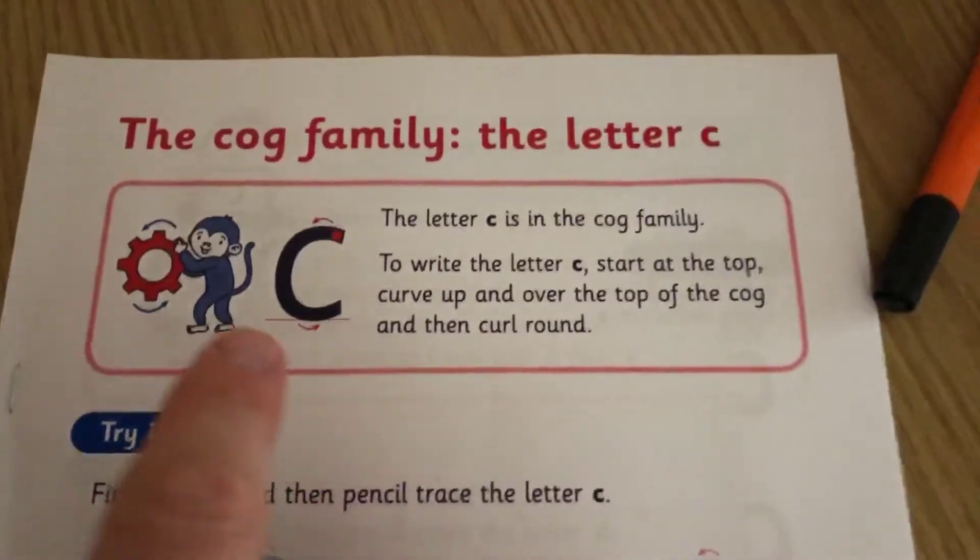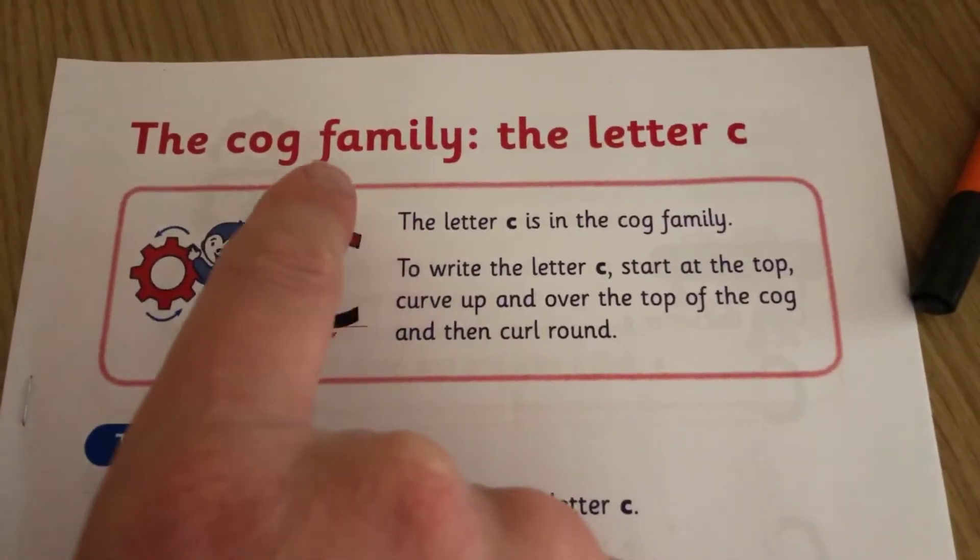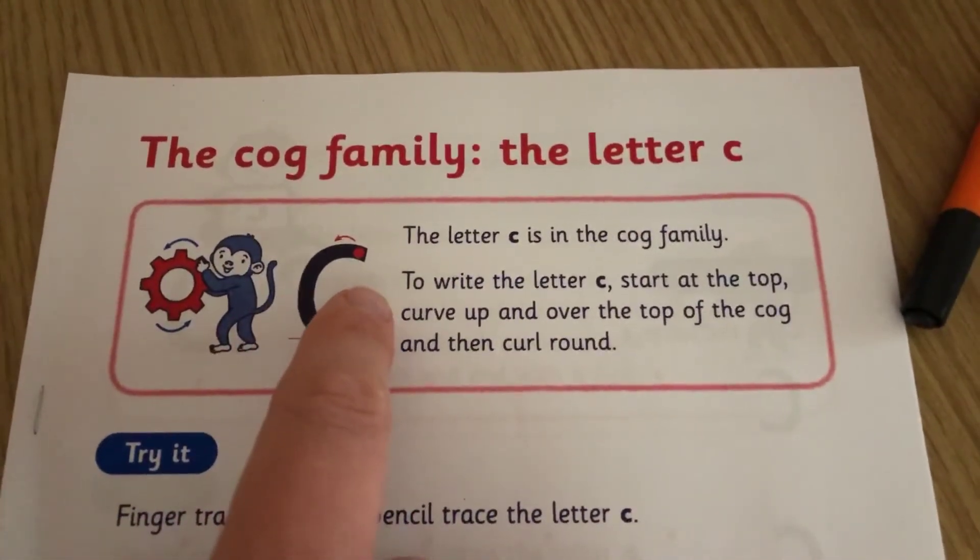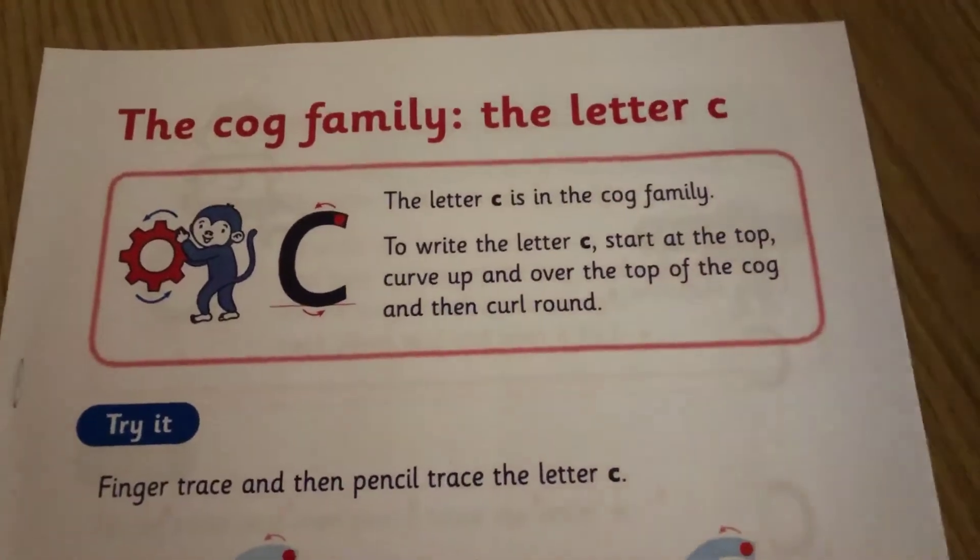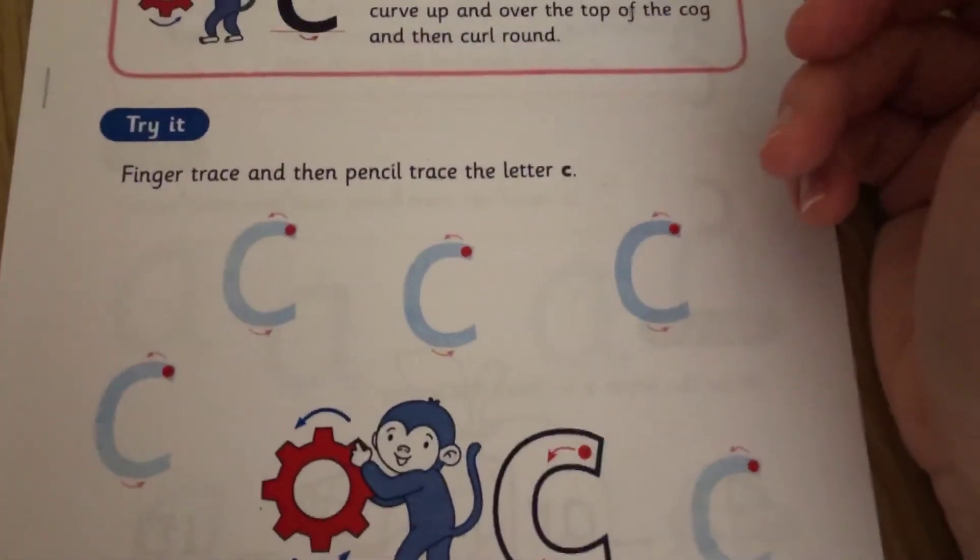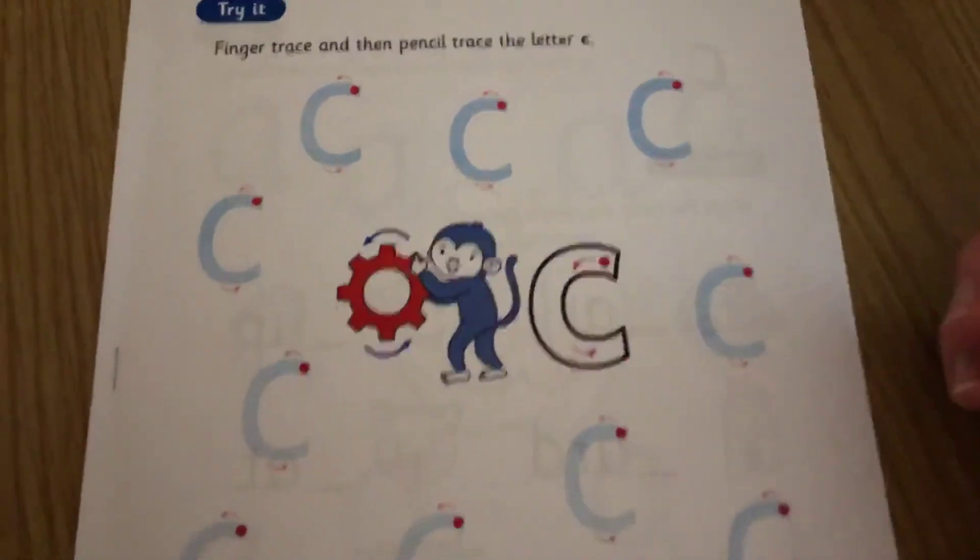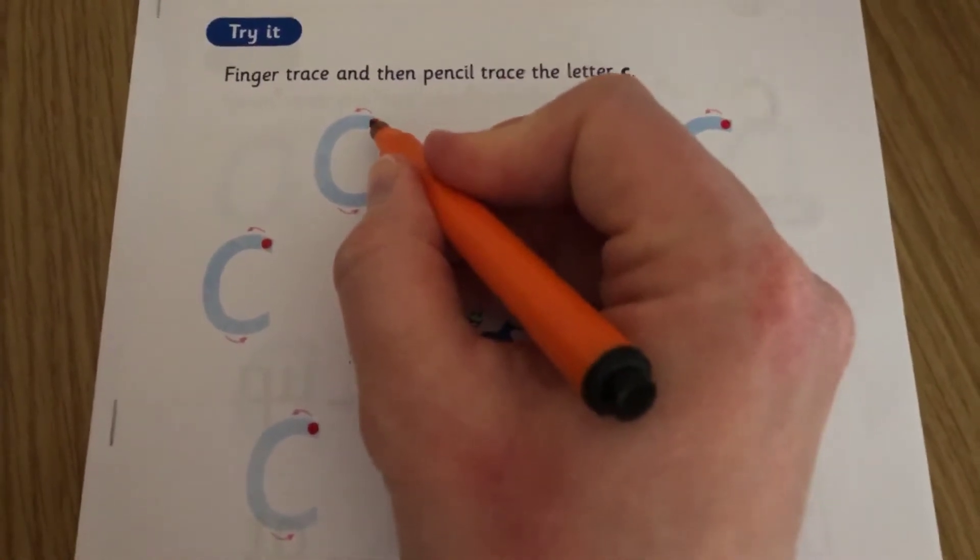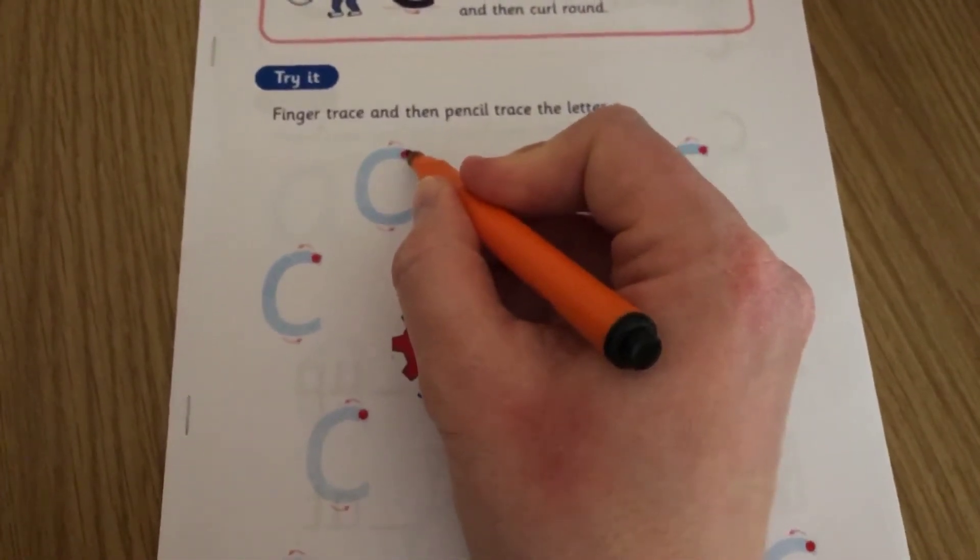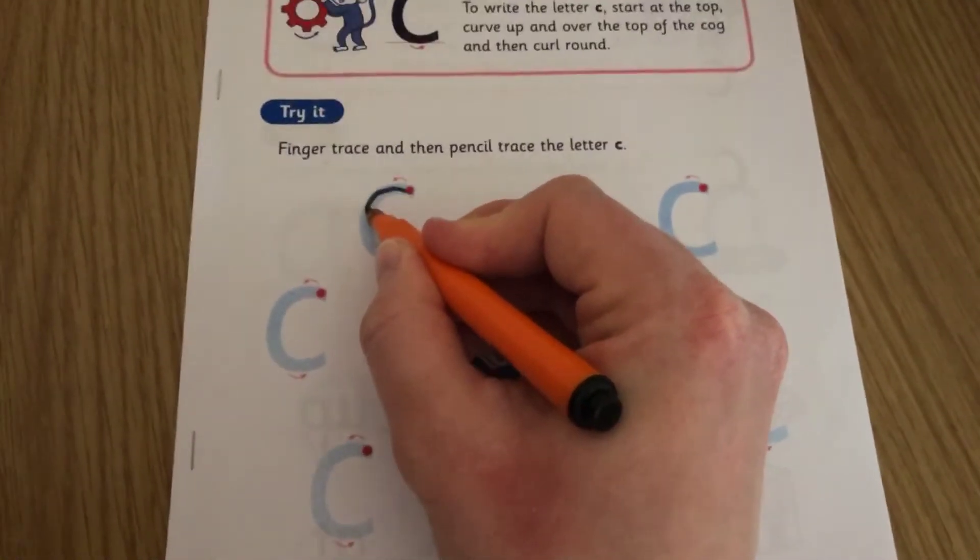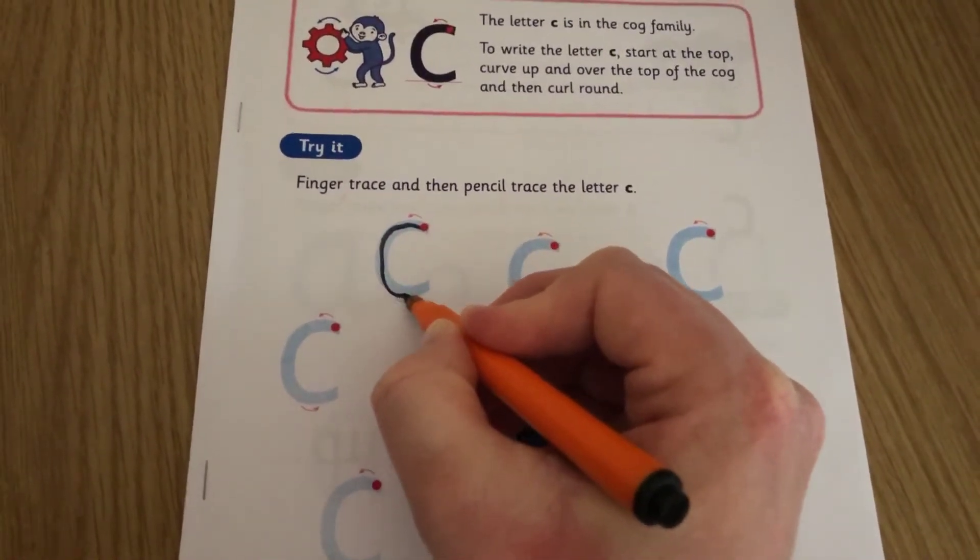So get your pencil or pen. If you're using a pencil, make sure it's nice and sharp. If you can, it's always better to do your handwriting at a table so you're sat properly. And then over these C in the top of the COG, can you do the handwriting thing? So I'm going to start here. I'm going to start at the top, curve up and over the top of the COG and then curl round.